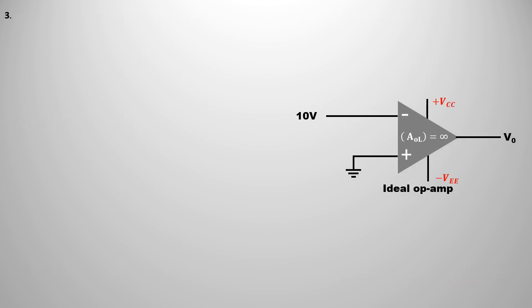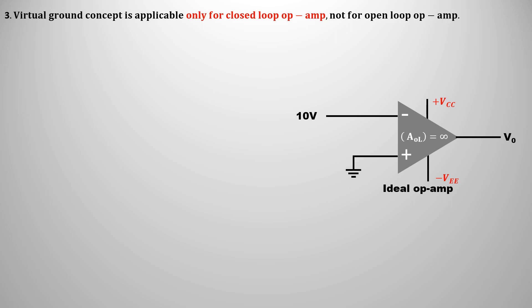The third limitation is that the virtual ground concept is applicable only for a closed-loop operational amplifier, not for an open-loop operational amplifier. Consider an ideal open-loop operational amplifier with an input voltage of 10V applied on the inverting terminal. Since there is no feedback resistance, the same voltage will also appear on the internal terminal. If we apply the virtual ground concept here, then 10V would have to equal 0, which is not possible. This is why the virtual ground concept is not applicable for an open-loop operational amplifier.